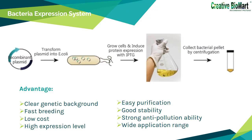Bacteria system: Currently, the E. coli expression system is the earliest and most mature expression system. The main method is to transfer a vector which contains an inserted target DNA fragment to the host cell, and then induce protein expression by IPTG. As the most widely used classical expression system, the E. coli expression system has the advantages of clear genetic background, fast breeding, low cost, high expression, easy purification of the product, good stability, strong anti-pollution ability, and wide application range.